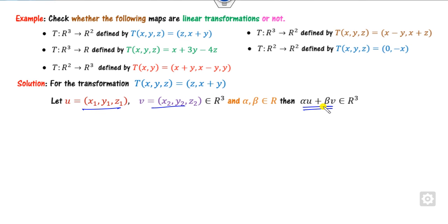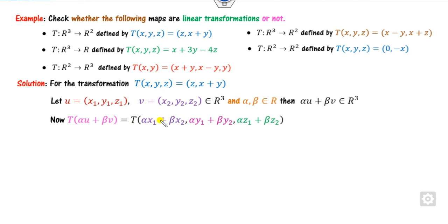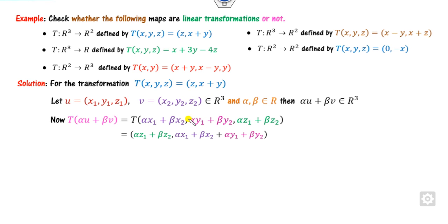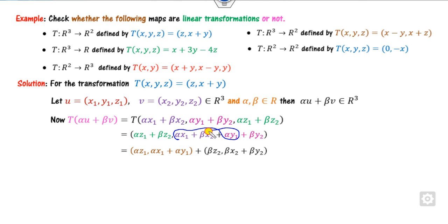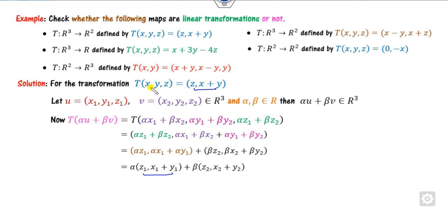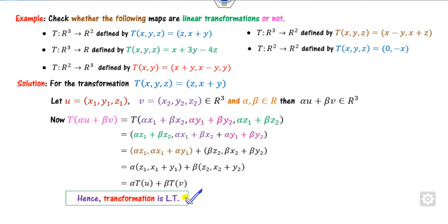Setting U and V, start with alpha U plus beta V. With x, y, z components, substituting gives z, x plus y. Taking the pair of z₁, x₁, y₁, then the second pair, taking alpha as common, this is nothing but alpha times T(U) plus beta times T(V). This means it is a linear transformation.